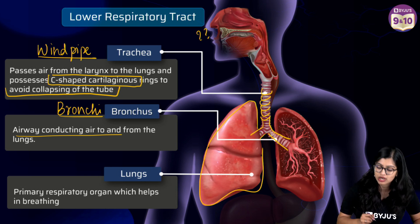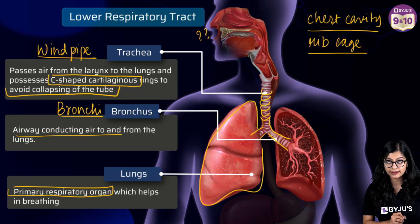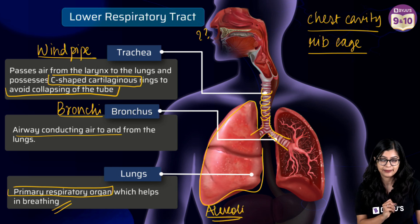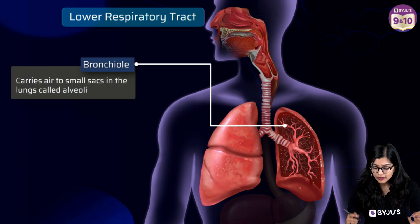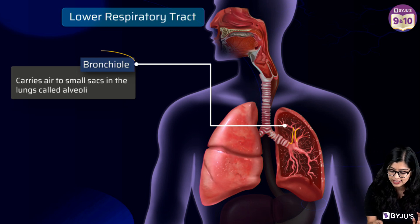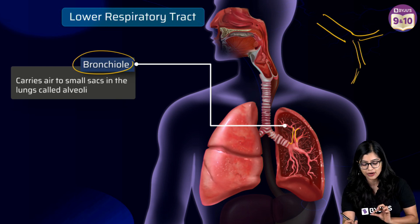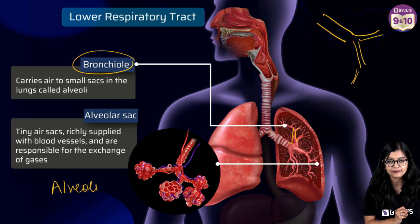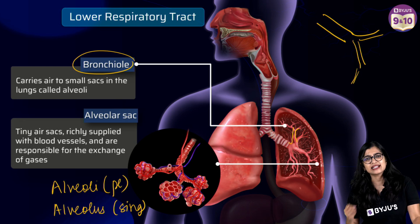The lungs are spongy structures and we have a pair of them. They are located in the chest cavity and protected by the rib cage. The lungs are the primary respiratory organ and house very important structures called alveoli. Once the bronchi enter the lungs, they further branch out into more and more branches called bronchioles. Bronchi are wider in diameter, but as they keep branching into bronchioles, the diameter becomes more and more narrow, eventually ending in air-sac-like structures called alveolar sacs, or alveoli — singular: alveolus.